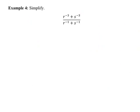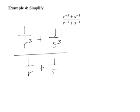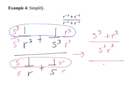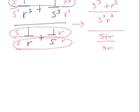Example 4 — we have to remember what negative exponents mean. We rewrite the entire fraction as 1 over r cubed plus 1 over s cubed, all over 1 over r plus 1 over s. Using Method 1, we find a common denominator up top and down below. Up top, multiply by s cubed over s cubed and r cubed over r cubed, making the numerator s cubed plus r cubed, all over a common denominator of r cubed s cubed. In the bottom, multiply by s over s and r over r, making the numerator s plus r over the common denominator r s. We take the numerator fraction and multiply by the reciprocal of the denominator fraction.